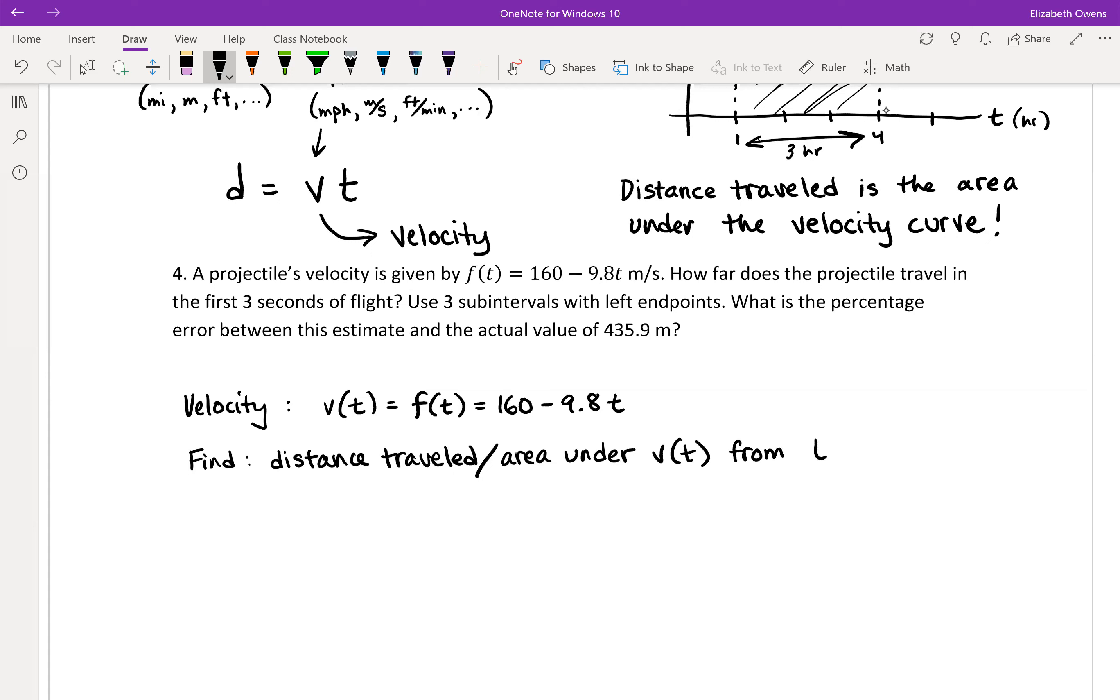In the first three seconds of flight, so that's from the starting point in time t equals zero to t equals three. And we want to use three subintervals with left endpoints. This word subintervals, you're going to see that from time to time in this chapter. Subintervals is just a fancy way of saying number of rectangles here. So subintervals is basically rectangles. It's the smaller things that your time interval in this case is being cut up into. So we're cutting up this time interval into subintervals of our little different rectangles. So three rectangles with left endpoints.